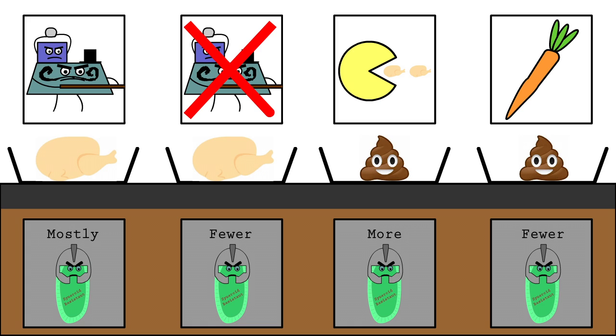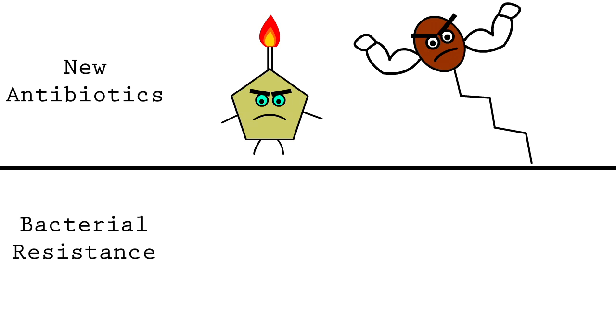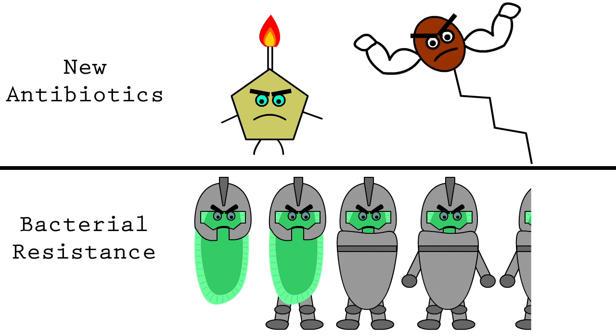These studies suggest that using antibiotics as growth promoters in animals can lead to antibiotic-resistant bacteria, which may eventually go on to infect humans. To make matters worse, only two new classes of antibiotics have been approved for use in the past 50 years, compared to 20 between 1940 and 1962, meaning our innovation hasn't kept up with bacterial resistance.